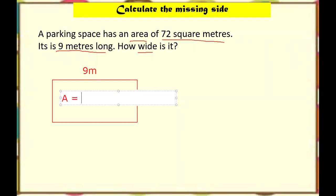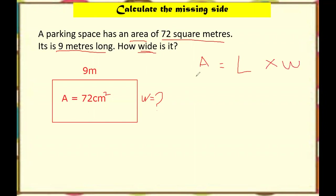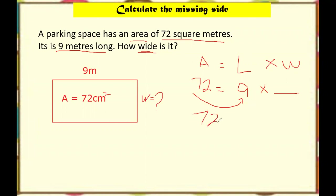The area equals 72 centimeters squared and the width is not given. Remember the formula: area equals length times width. Area is 72, length is 9, so: 9 times width equals 72. The opposite of multiplication is division, so 72 divided by 9 equals 8. The width is 8.